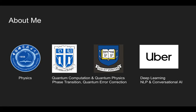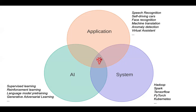Feel free to interrupt me during the talk — I can't see your faces so I can't tell if I'm going too fast or slow. So let me motivate the talk. When you think about AI or machine learning applied to industry problems, it typically involves three major components. The first, which everyone talks about most, is the AI technology itself — supervised learning, reinforcement learning, language models with pre-training. That was a big deal last year for NLP: pre-trained models like BERT and XLNet, and generative models.